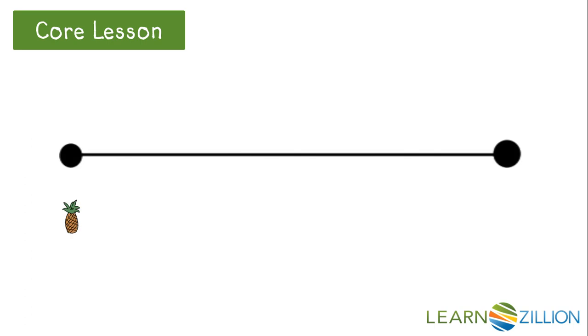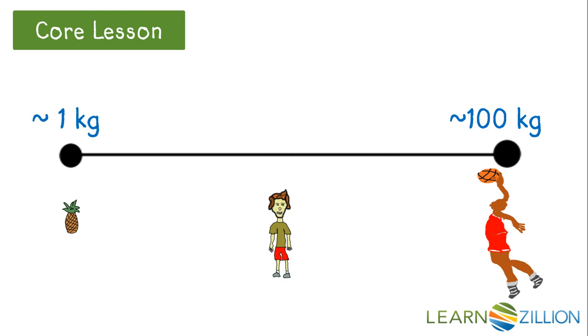A pineapple has a mass of 1 kilogram, and an average basketball player has a mass of about 100 kilograms. Using that, what do you think the mass is of this fourth grade student? The mass is about 50 kilograms.